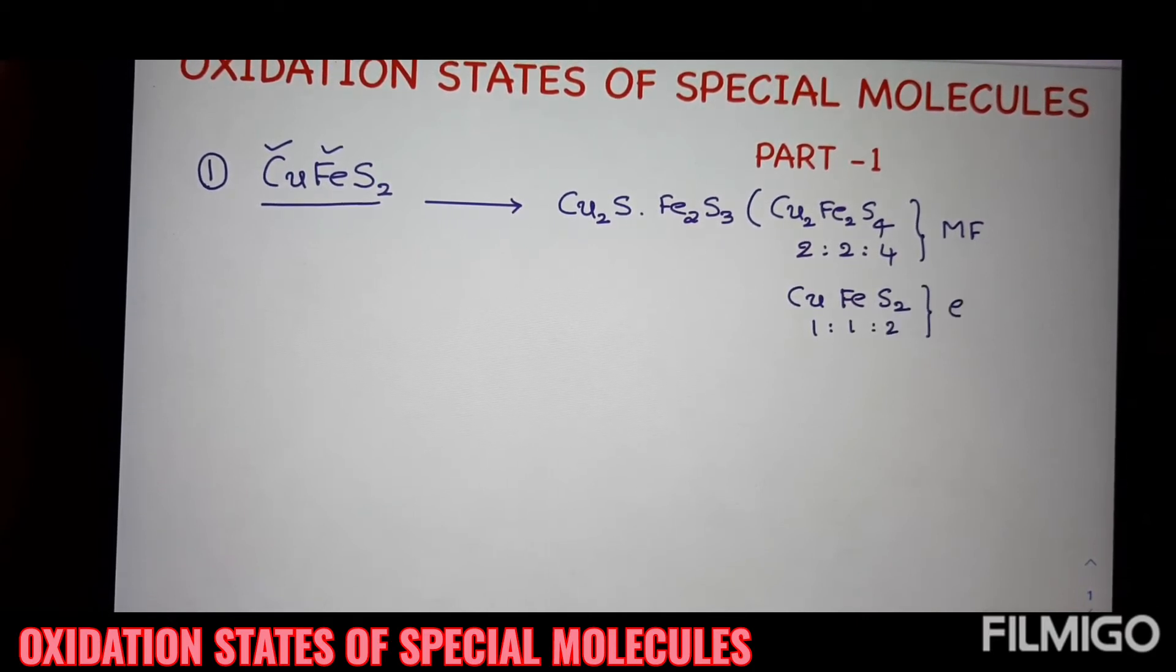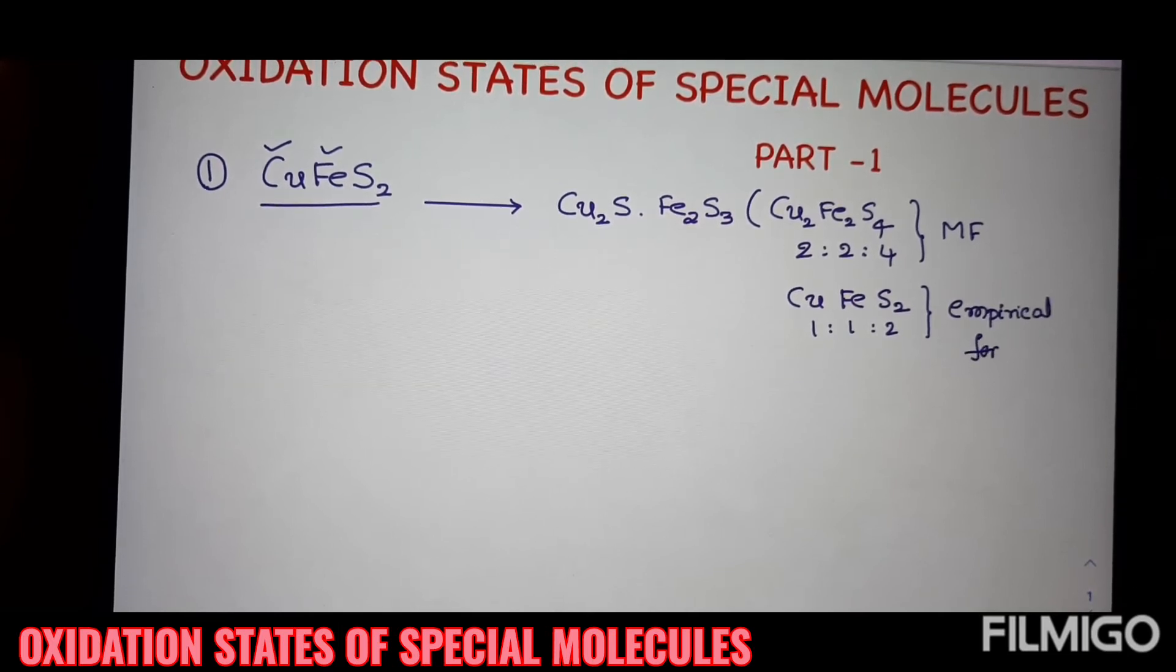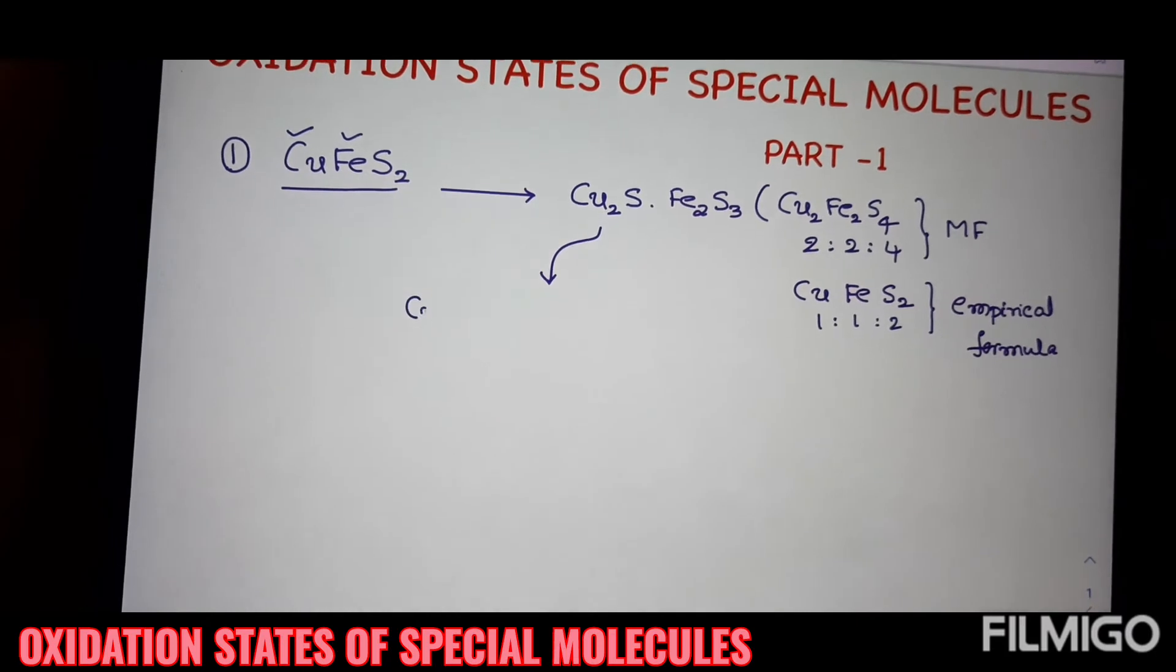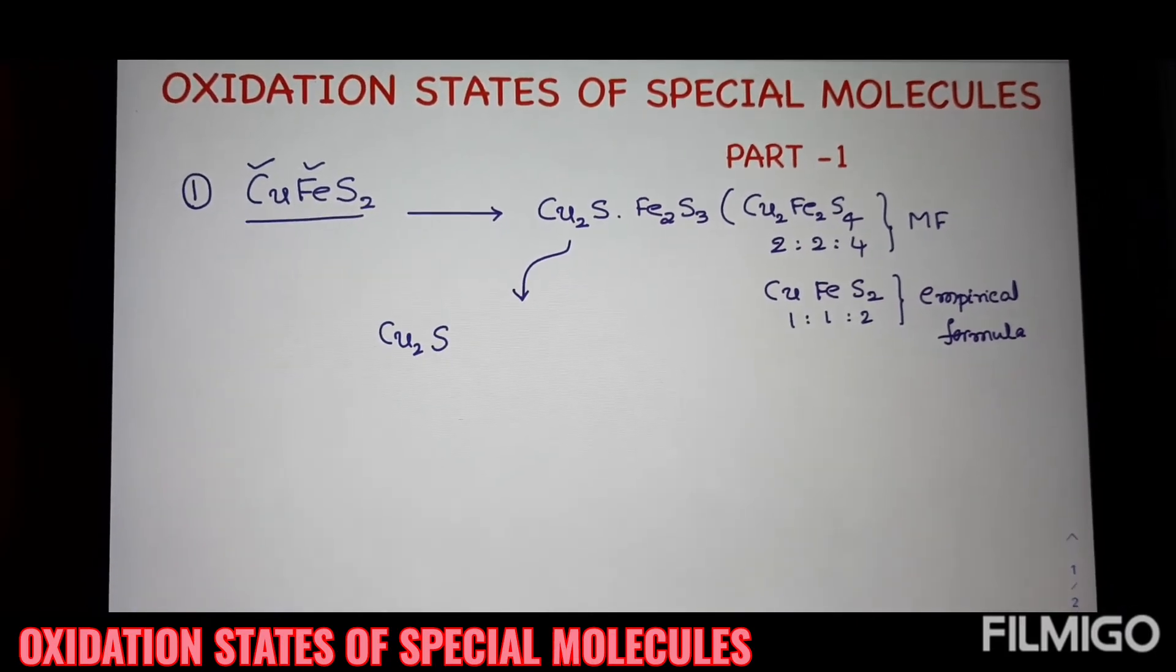This is the empirical formula. Generally for copper iron sulfides, empirical formula is given. But real molecular formula is Cu2Fe2S4.